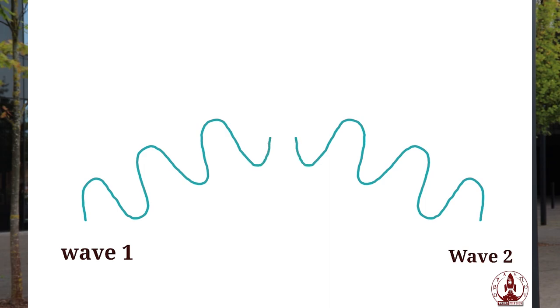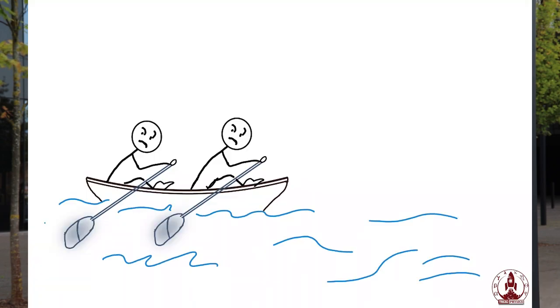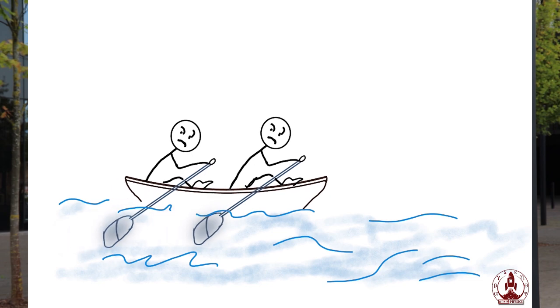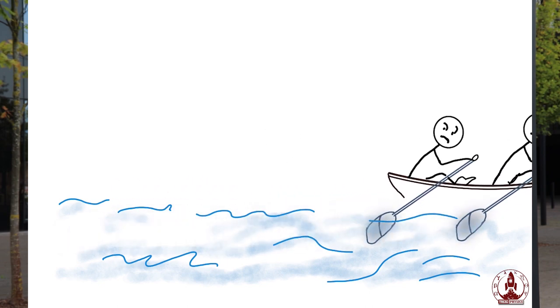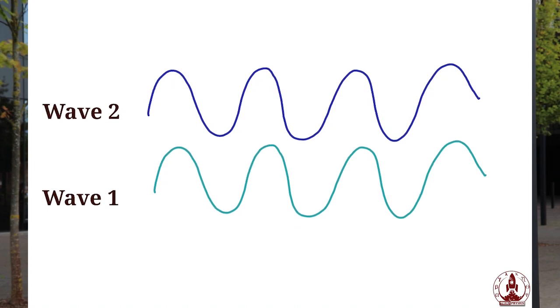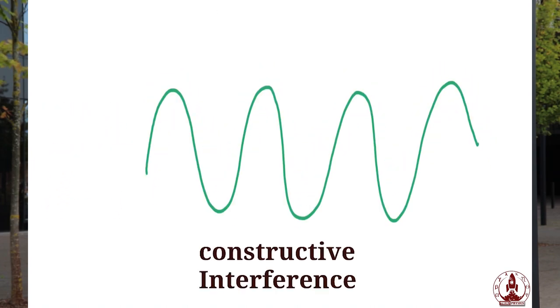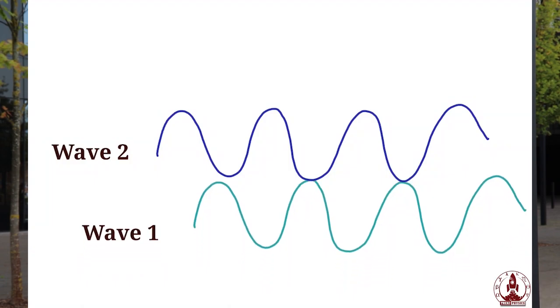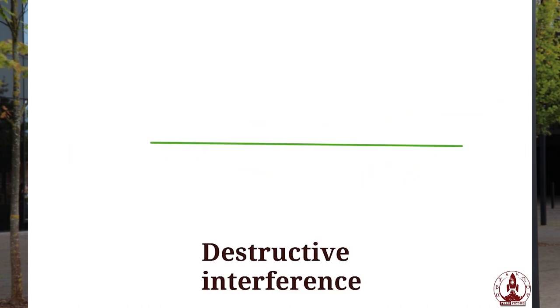Interference is a physical phenomenon that happens when two waves meet. When they meet, they can either work together or work against one another. You can think about this like two people in a boat — if they're both rowing in synchronization they work together and move the boat forward, but if they row out of synchronization the boat doesn't move. When two waves meet they can either add constructively, giving a large amplitude, or undergo destructive interference, cancelling each other out and giving zero amplitude.